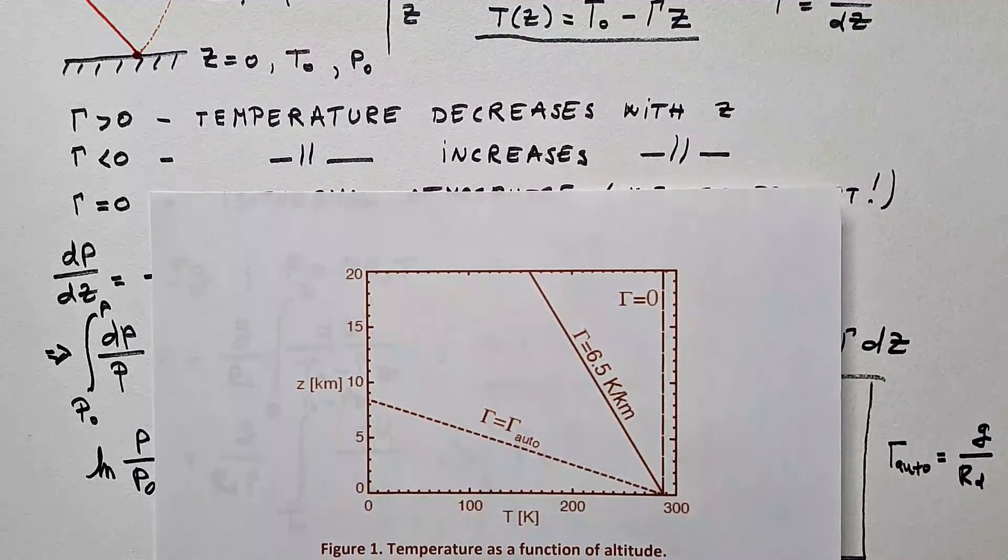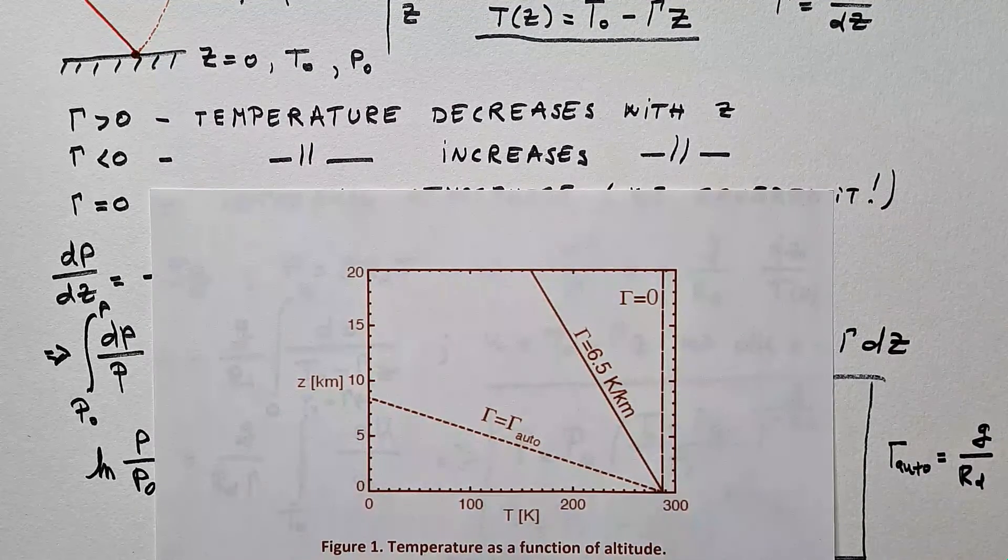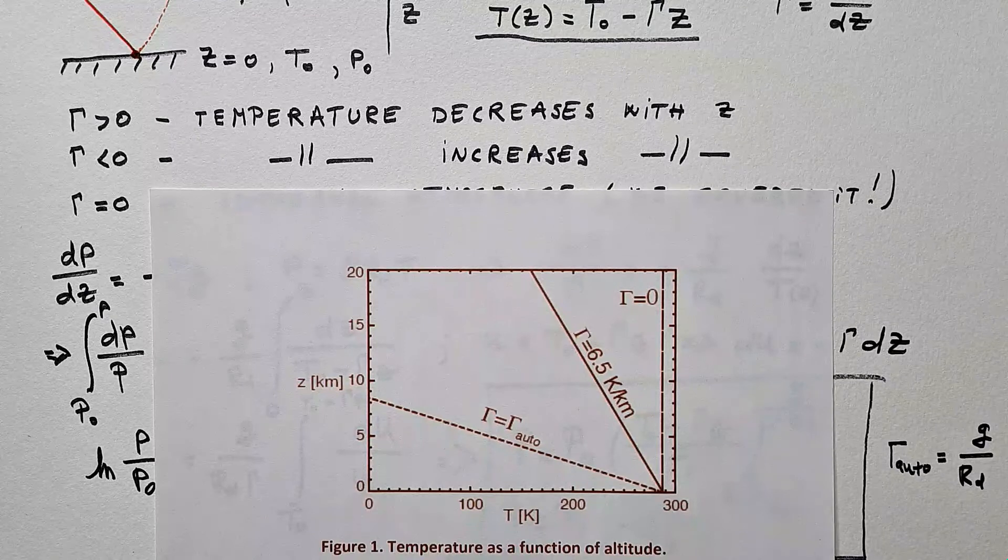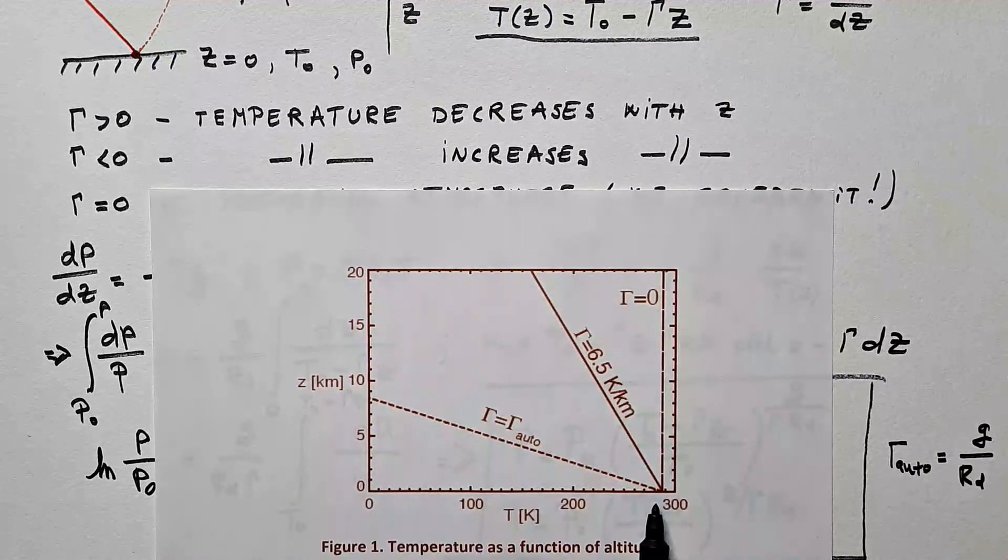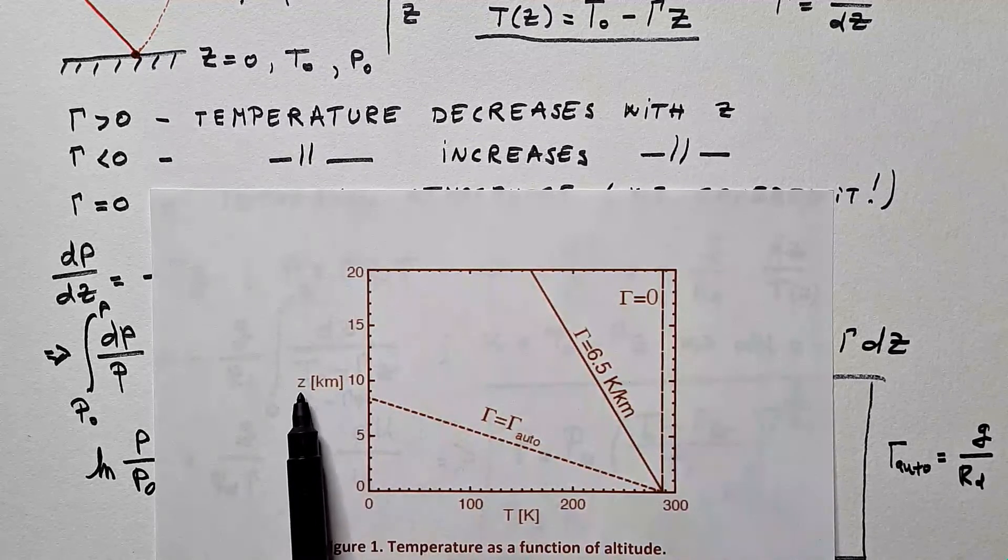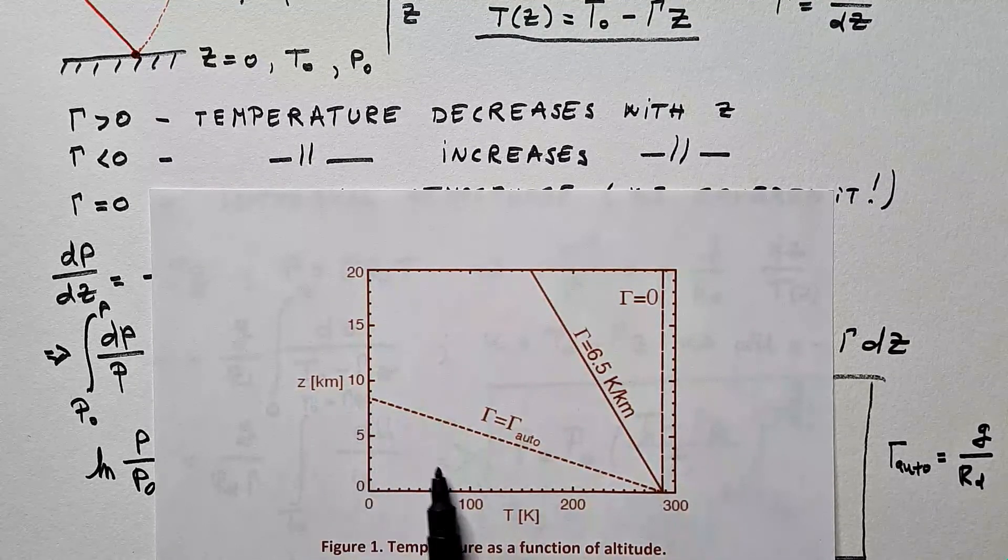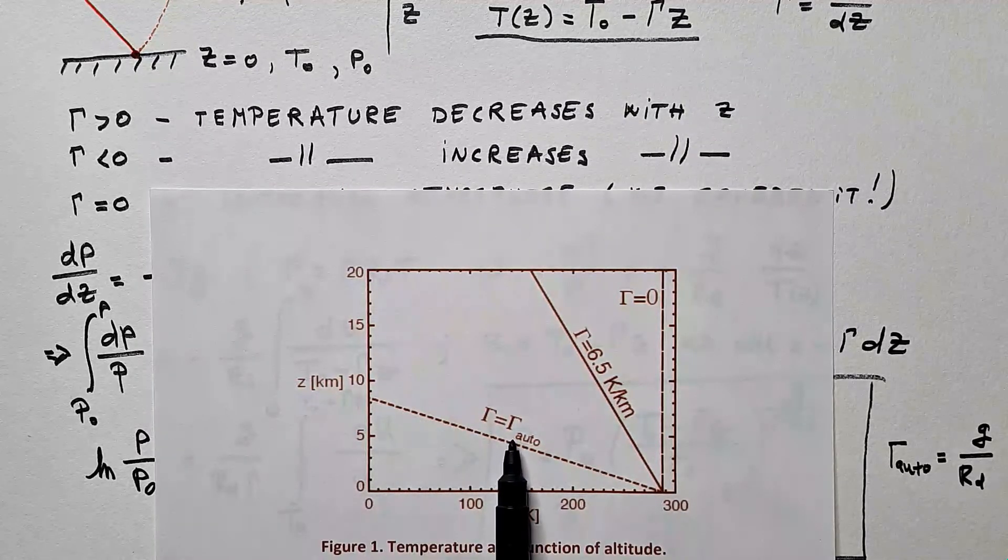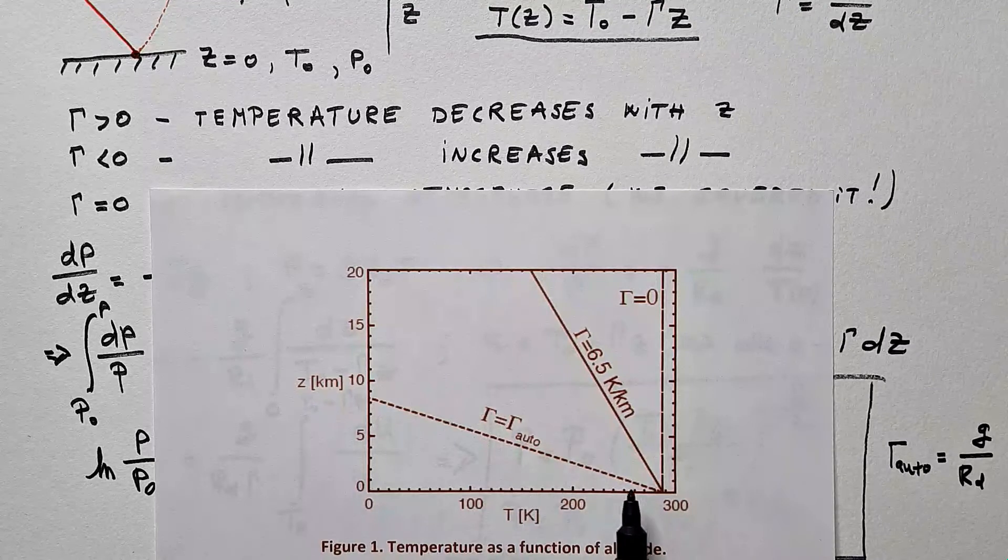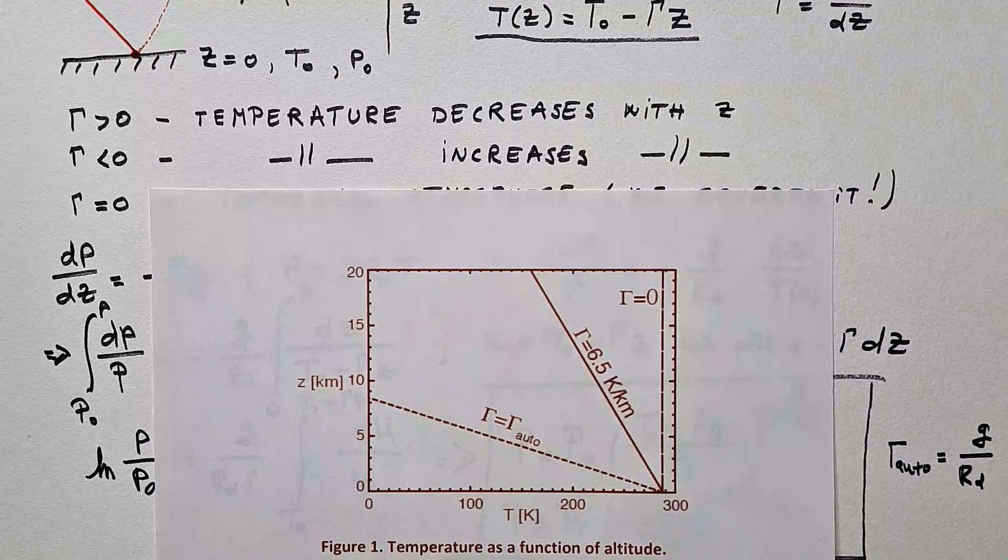because I am so nice and kind, I prepared for you a graph of three situations that we analyzed in the previous three, four videos. X axis is temperature in Kelvin. Y axis is height in kilometers. Notice that we already covered the case of autoconvective temperature lapse rate.